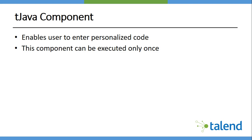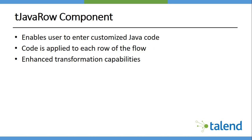The second and more interesting component is tJavaRow. As the name indicates — 'Java row' — this component accepts all rows from the preceding component, then performs some sort of transformations on the attributes of the incoming rows, and passes them on to the next component. It is used for performing enhanced transformation capabilities.